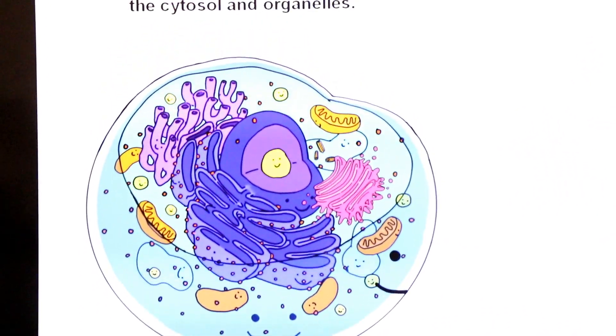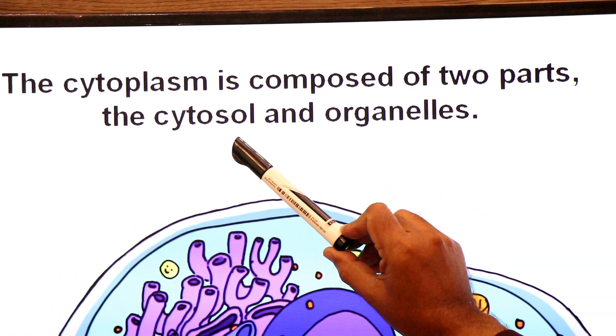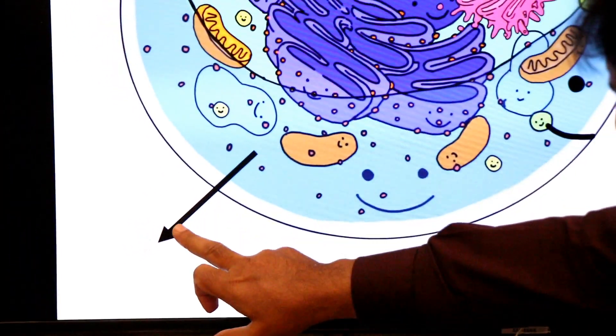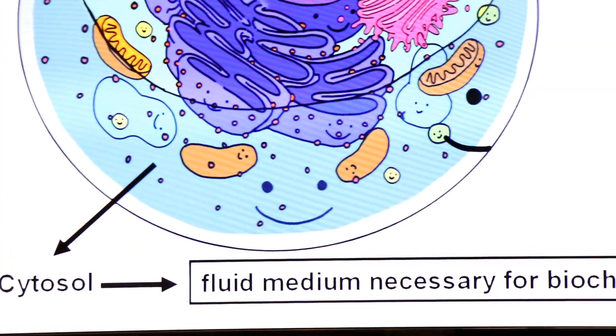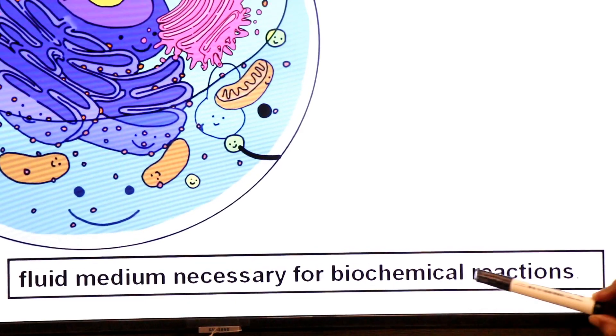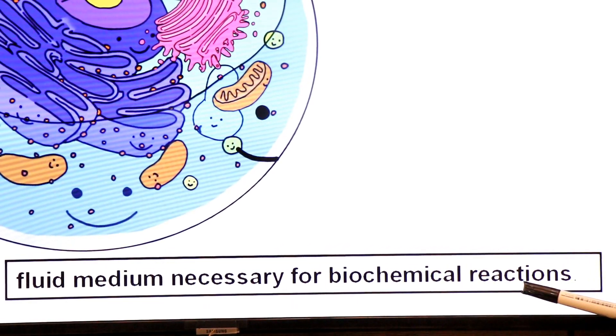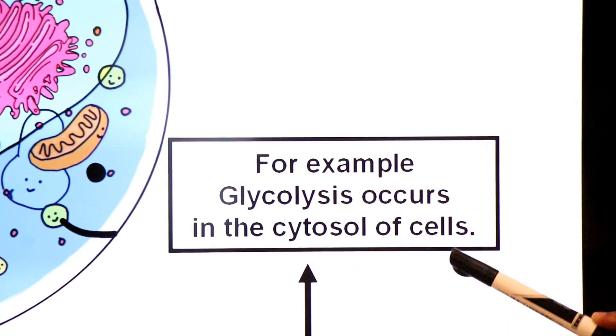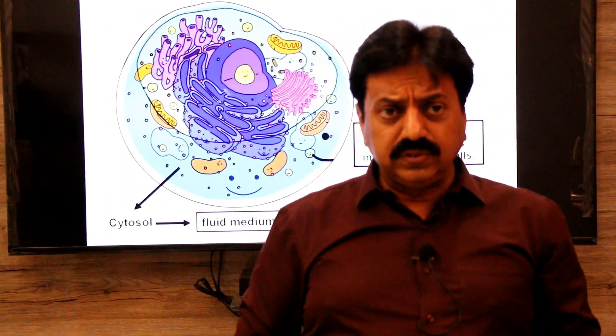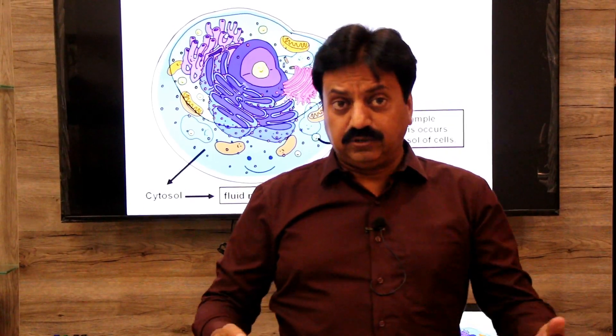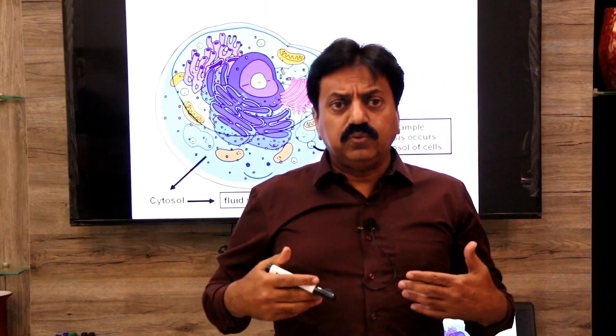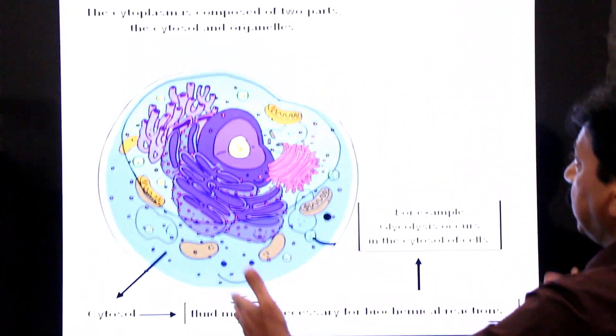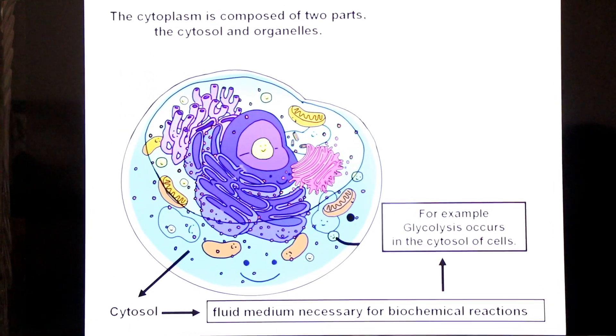Cytoplasm is composed of two parts. One part is cytosol, and the other part is little organs known as organelles. Cytosol is a fluid medium necessary for biochemical reactions. For example glycolysis occurs in the cytosol of cells. Glycolysis is a process in which glucose breaks into pyruvic acid molecules in cytosol. This process doesn't use oxygen. Focus on the whole slide and take screenshot.